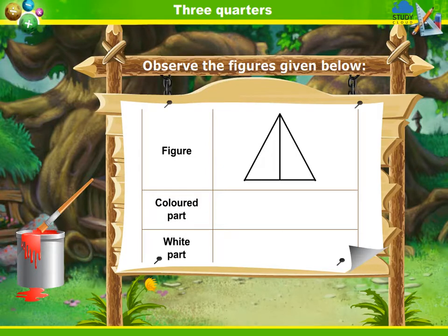The third figure is of a triangle whose half part is coloured and half part is white.